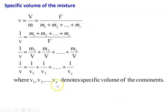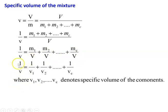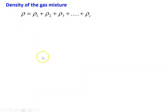The specific volume of the gaseous mixture is defined as v = V/M, where M = M1 + M2 + M3. Taking the reciprocal, 1/v = (M1 + M2 + ... + Mc)/V, which gives 1/v = M1/V + M2/V + ... + Mc/V. Therefore, 1/v_mixture = 1/v1 + 1/v2 + ... + 1/vc, where v1, v2, v3 are the specific volumes of the components. Since 1/v = density, the density of the mixture: ρ = ρ1 + ρ2 + ρ3 + ... + ρc.